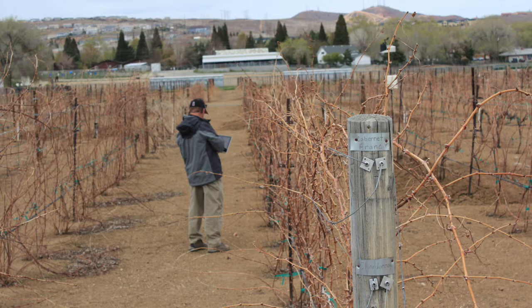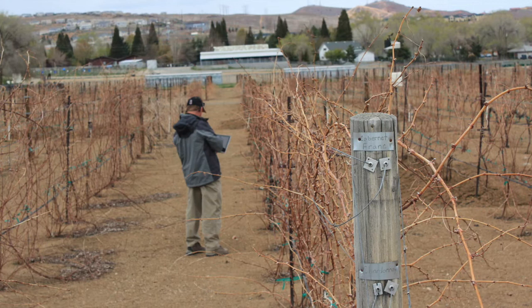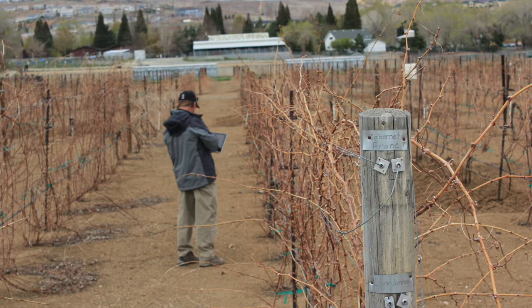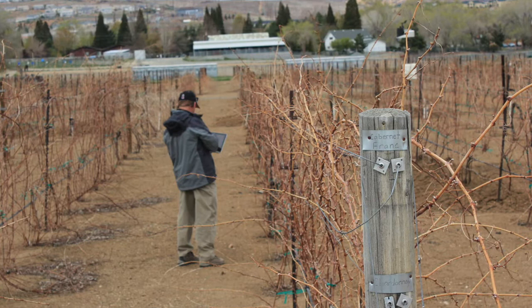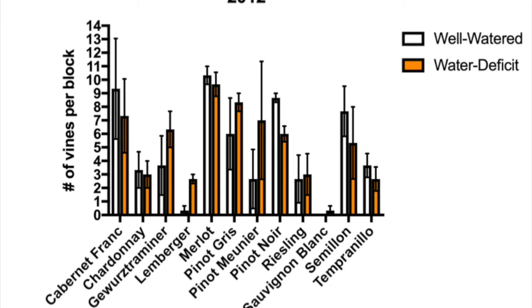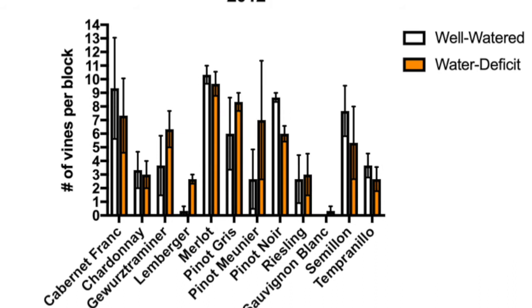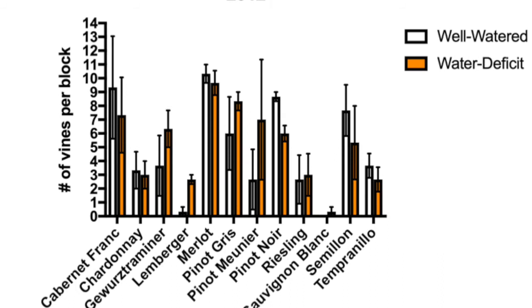The University Experimental Vineyard is a randomized block design with six blocks. Three of those blocks were drought stress grapes, and three of those blocks were well-watered. There are 12 varieties in those blocks with 15 vines for each variety. In this figure you can see a tally of the number of vines for each variety that were affected by the crown gall in 2012. The white bars represent the well-watered vines, and the orange bars represent the water deficit vines. Each of these bars represents the means of three different blocks.